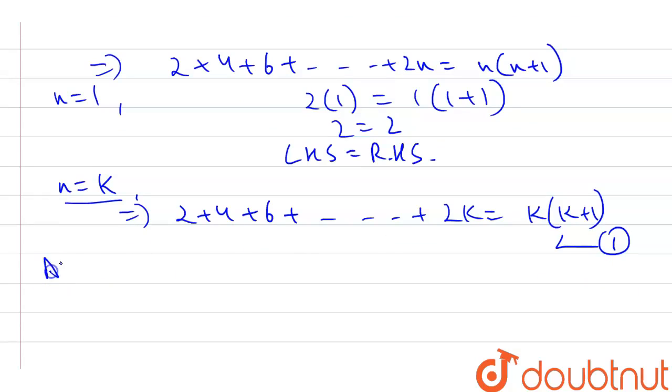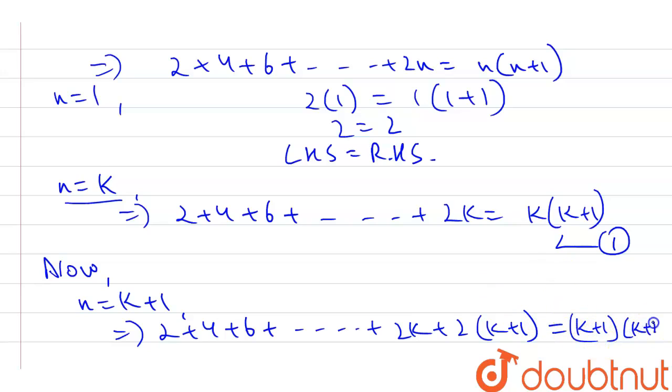Now, putting n = k+1, this becomes 2 + 4 + 6 + ... + 2k + 2(k+1) = (k+1)(k+2).